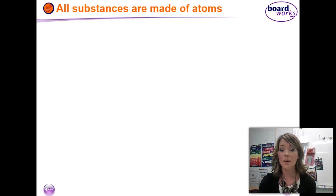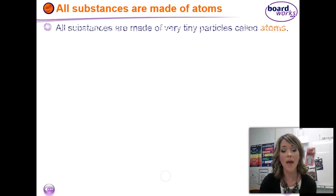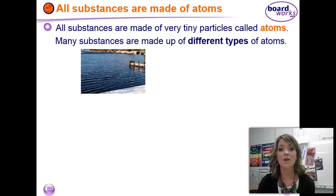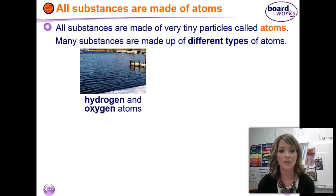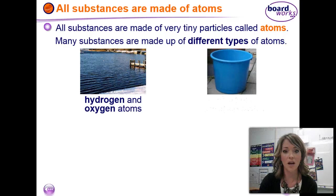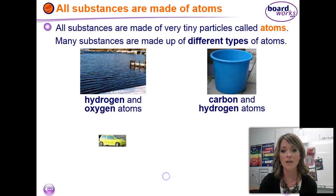What are those substances made up of? Well, all three of them are going to be made up of atoms, which are tiny particles of matter. There are some substances that are made of different kinds of atoms. Water, for example, is made up of hydrogen and oxygen atoms.